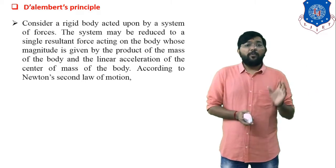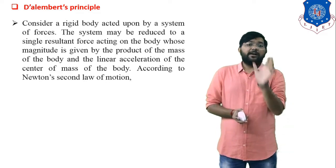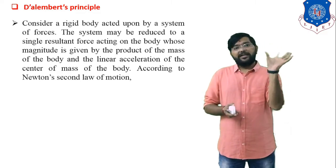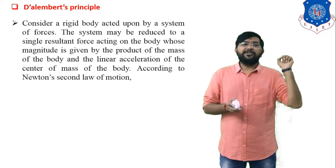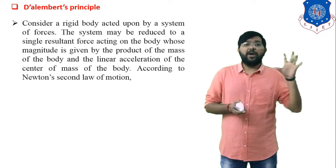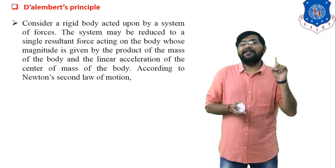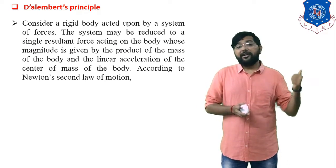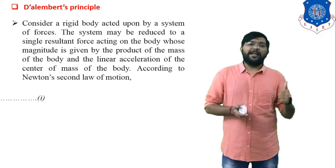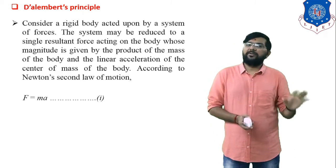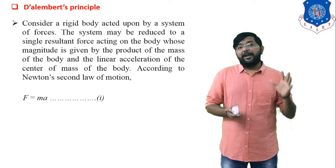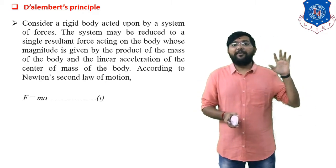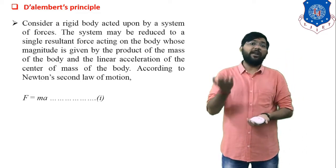Consider a rigid body acted upon by a system of forces. This system may be reduced to a single resultant force. Suppose force is applied from three directions — you have to find the resultant force, converting all forces into a single resultant direction. The resultant force acts on the body with magnitude given by the product of mass and linear acceleration of the center of mass, according to Newton's second law: F = ma.